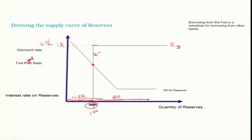The federal fund rate will never go below the interest rate on reserves — that is 2.25 percent — because it is better for banks to deposit their money with the Federal Reserve System and earn interest rather than lend in the Fed Fund market at a rate lower than the interest rate on reserves. Another thing is that the Fed Fund rate is never going to be above the discount rate — the interest rate on the Federal Reserve System's loans — so the Fed Fund rate will never exceed the discount rate.